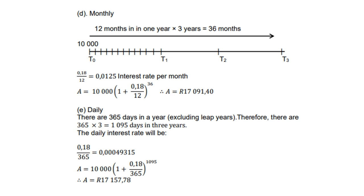For daily compounding, there are 365 days in a year (not considering a leap year), so three years gives 1,095 days, and the interest rate is divided by 365, giving approximately 0.00049315. Therefore A = 10,000 × (1 + 0.18/365)^1095, giving R17,157.78.